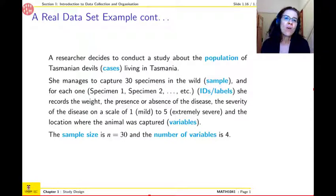Because she's interested in knowing how the disease progresses, she records the weights, the presence or absence of the disease for each individual, how sick they are—so that's the severity of the disease. One means they're not very sick, and five, they're really sick, so the disease is extremely severe. And then finally, she records the location where the animal was captured.